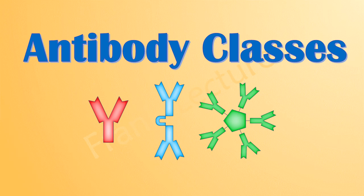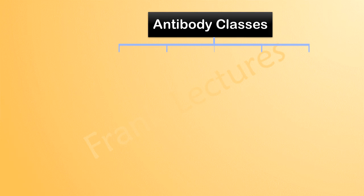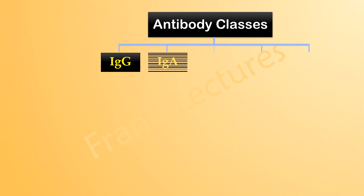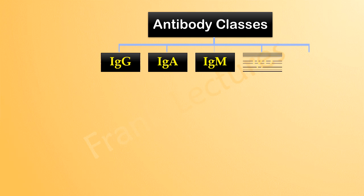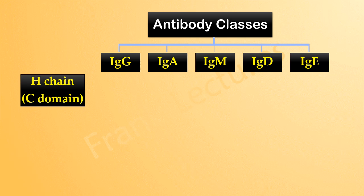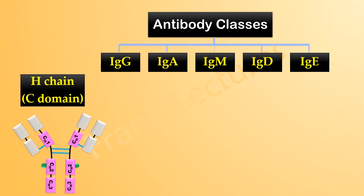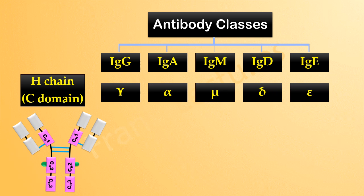In the previous video lectures, we said that immunoglobulins or antibodies are divided into five main classes: IgG, IgA, IgM, IgD, and IgE. The basis of this classification is the constant region of heavy chains. These regions are unique to each class, and each class has distinct physical properties and biological effector functions. Now we will discuss each antibody class.